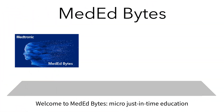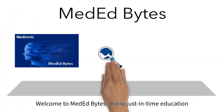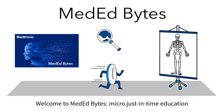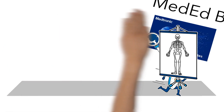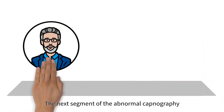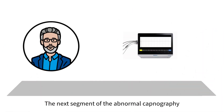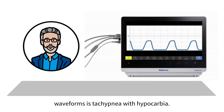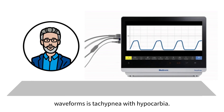Welcome to MedEdBytes Micro Just-In-Time Education. The next segment of the abnormal capnography waveforms is tachypnea with hypocarbia.